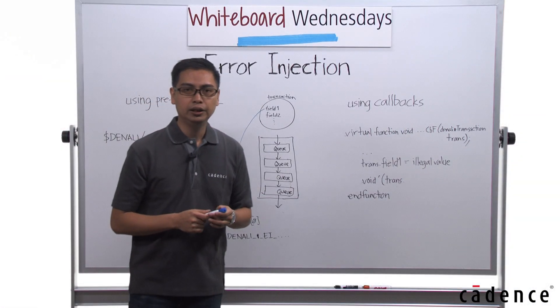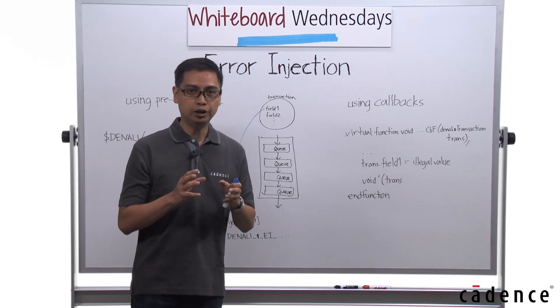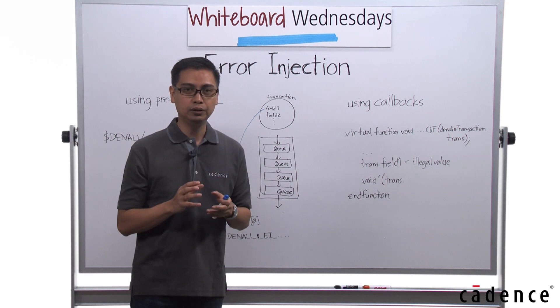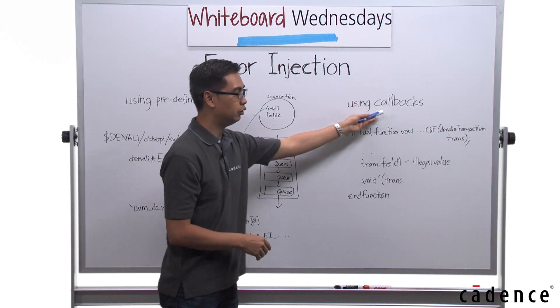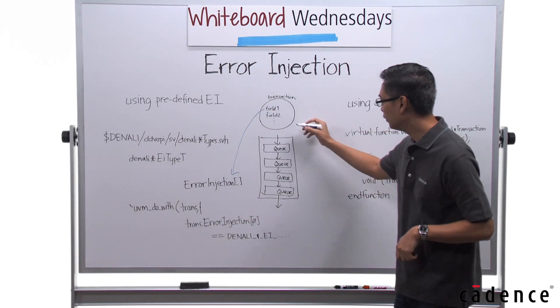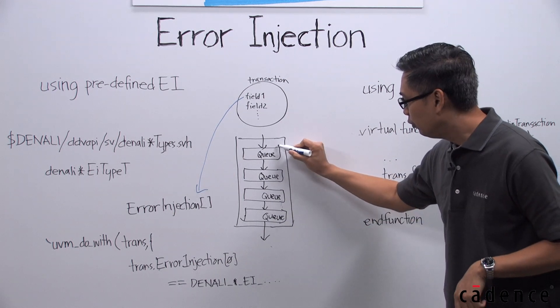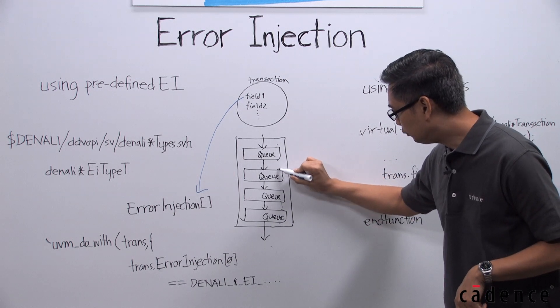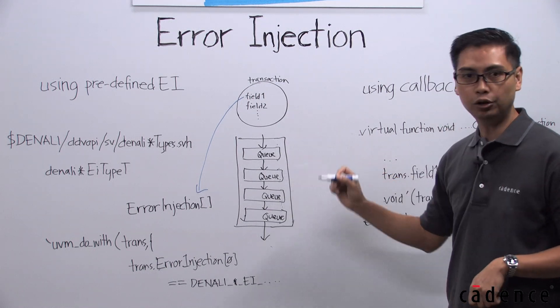However, if you want to be more specific or if you want to have more control in the kind of error injection that you want, then you can use callbacks. Again, looking at our diagram here, the transaction goes through the queues, and at each point of the queue, entering the queue, exiting the queue, we have callbacks.